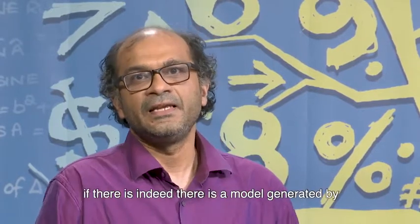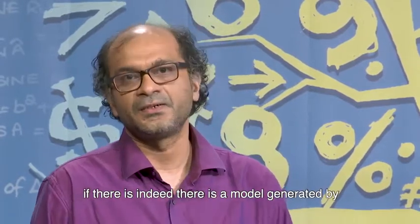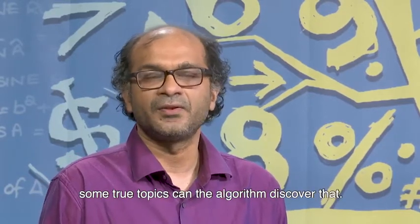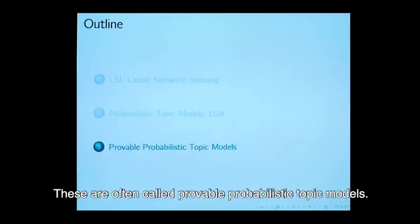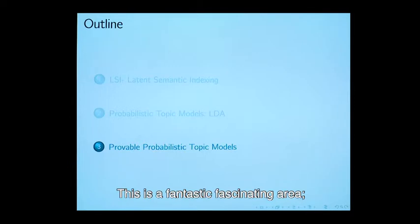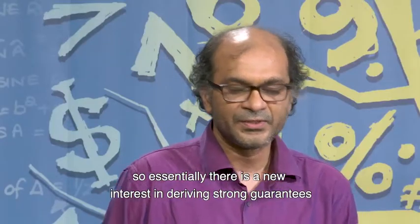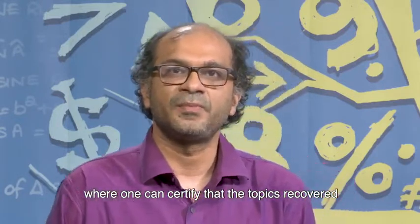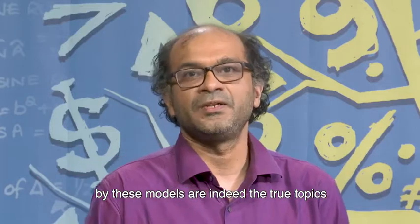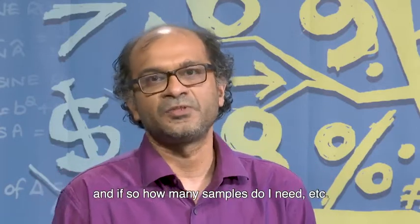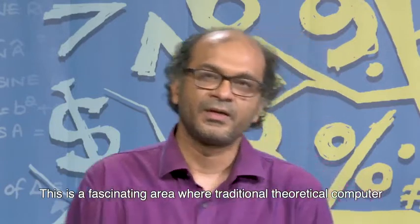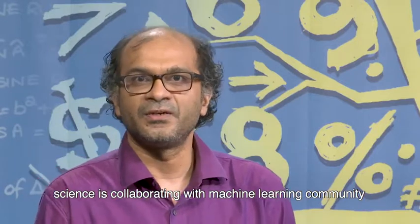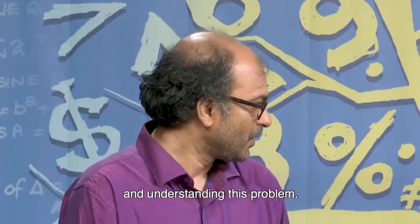That is, if there is indeed a probabilistic, there is a topic model generated by some true topics, can the algorithm discover them? These are often called provable probabilistic topic models. This is a fantastic fascinating area. Essentially, there is a new interest in deriving strong guarantees where one can certify the topics recovered by these models are actually the true topics and if so, how many samples do I need. It is a fascinating area where traditional theoretical computer science is collaborating with machine learning community in understanding this problem.